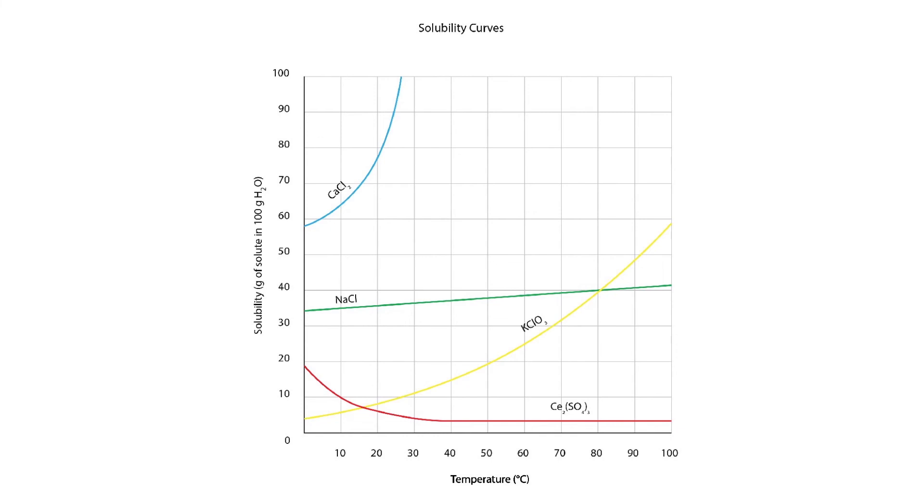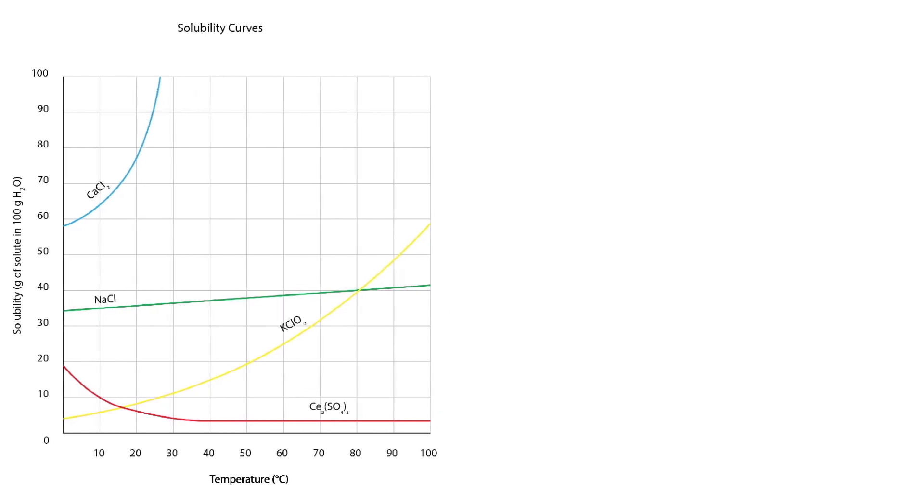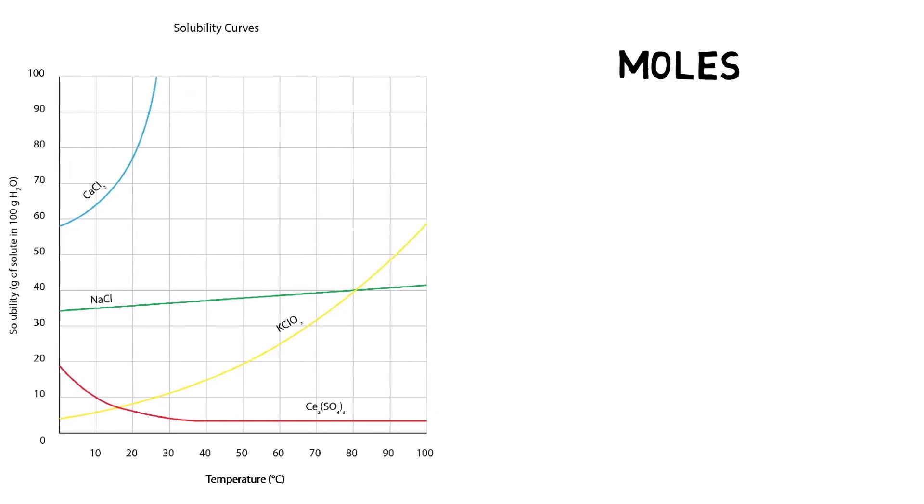For example, molarity is a way of expressing the number of moles of a substance in one liter of solution, whereas molality expresses the number of moles of a substance per kilogram of solvent. But what are moles?